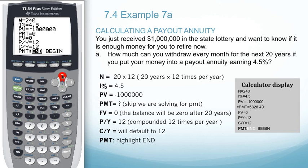We'll arrow back up to payment, hit alpha and enter to solve. So we can withdraw $6,326.49 every month for the next 20 years.